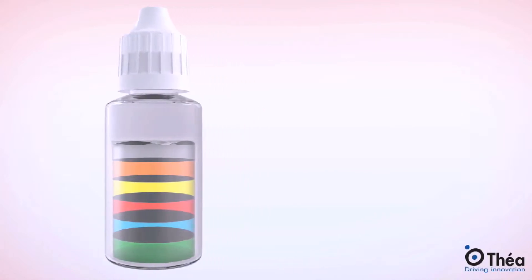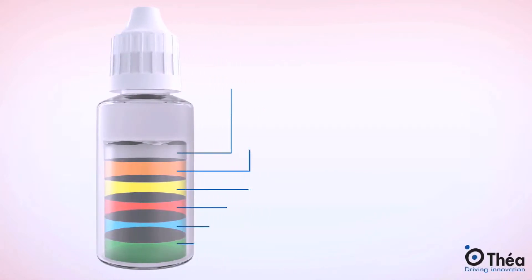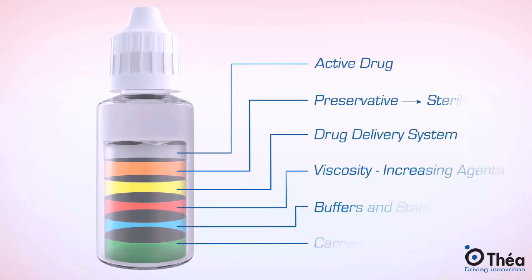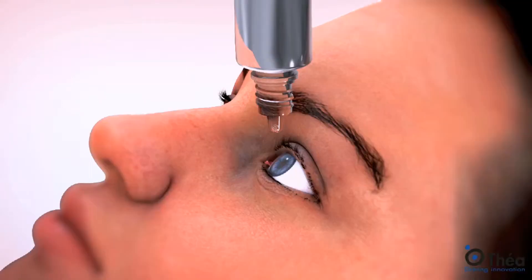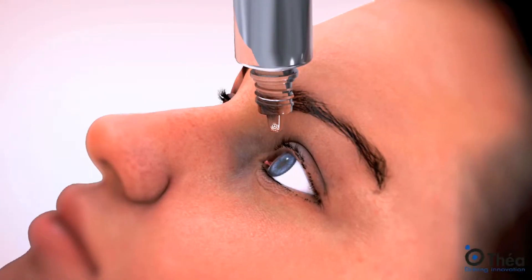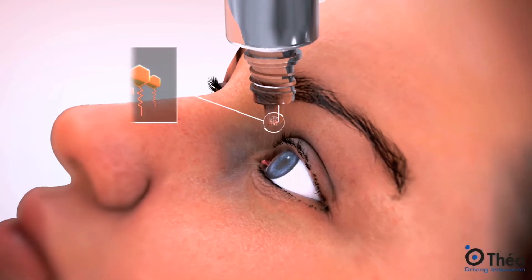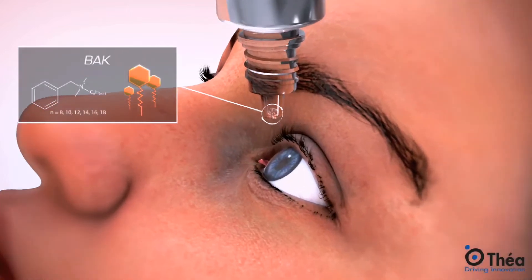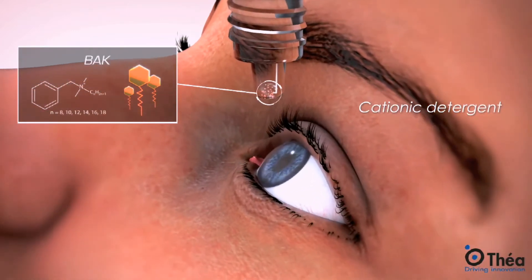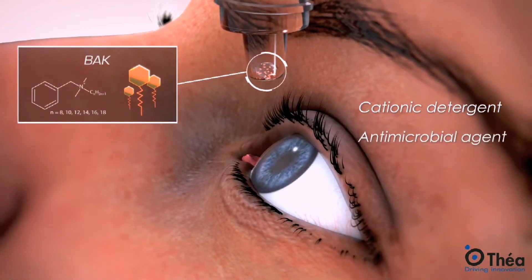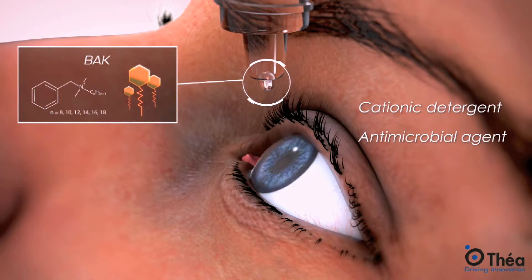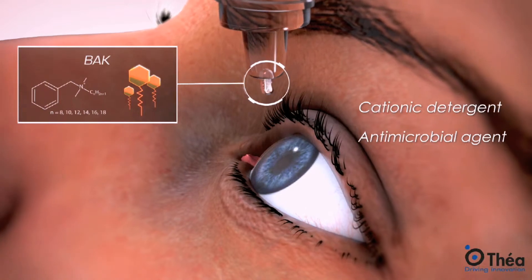Preservatives are required to maintain sterility in standard topical multi-dose ophthalmic eye drops. Above all, benzalkonium chloride or BAC, a cationic detergent, is the gold standard and the most commonly used antimicrobial agent because of its powerful detergent action on bacterial walls and membranes.